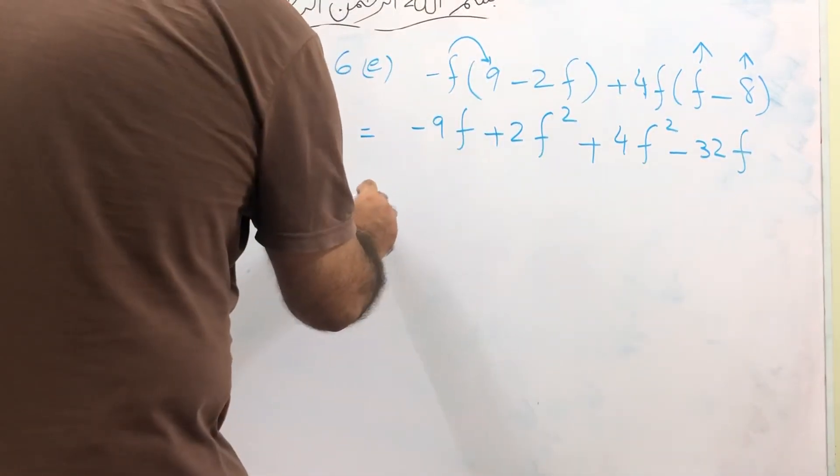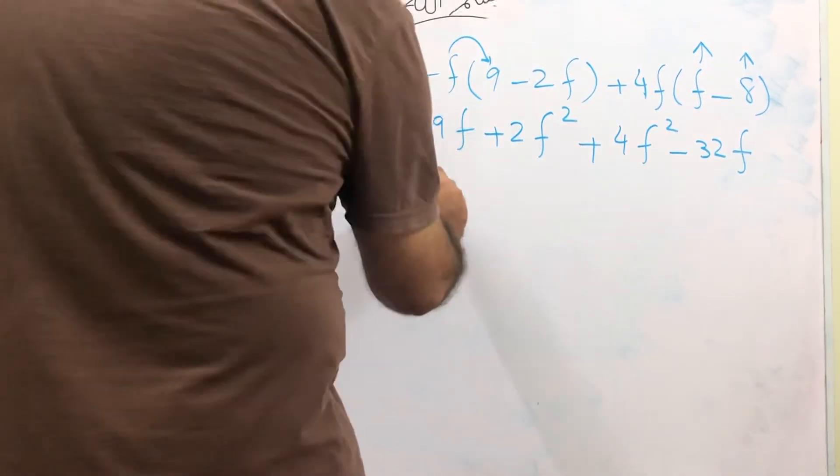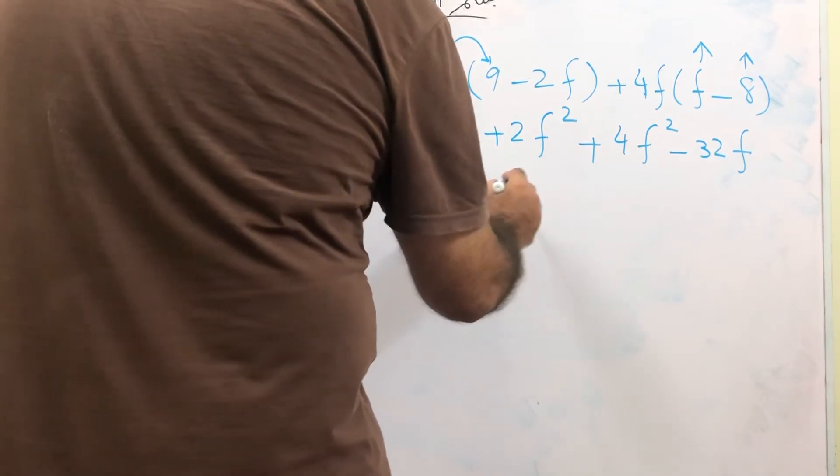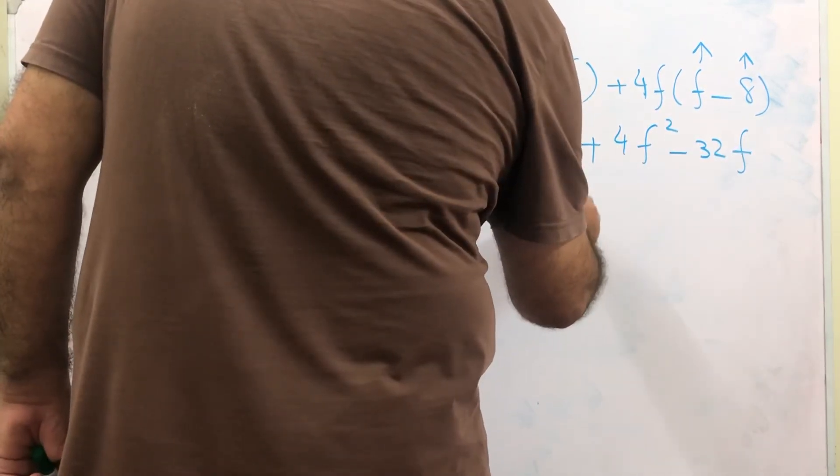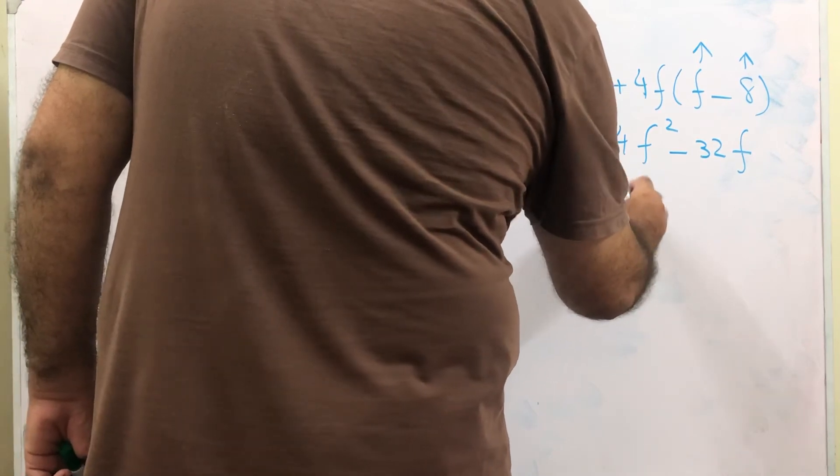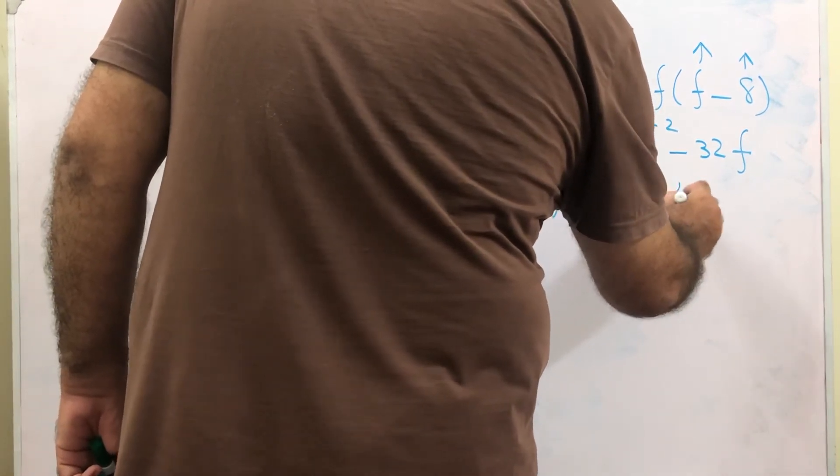Now we will bring together the variables with the same powers. Minus 9f, minus 32f. Plus 2f square, plus 4f square.